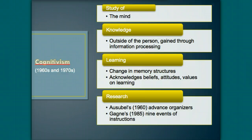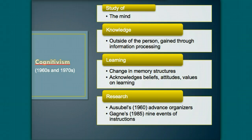Next up is Cognitivism. According to Cognitivism, knowledge is still considered to exist outside of the person. However, this learning theory's focus is on understanding how human memory works to acquire knowledge and promote learning. The focus is on how learners acquire specific types of strategies for learning, including planning, monitoring, and evaluating, and the influence of prior knowledge, beliefs, attitudes, and values on learning. This theory developed a clearer understanding of how information is processed and stored, as well as how prior knowledge is stored in memory structures, called schema, for retrieval in the appropriate context.